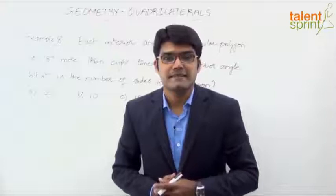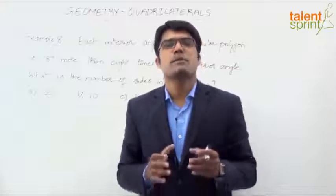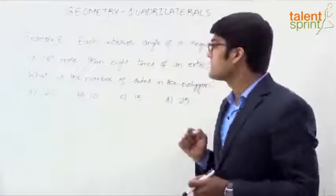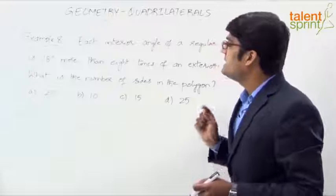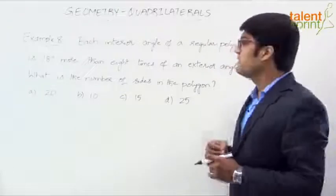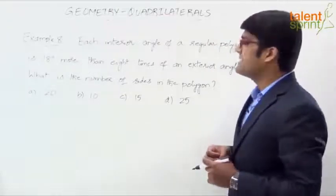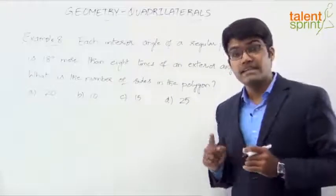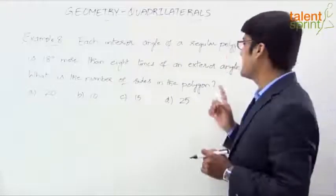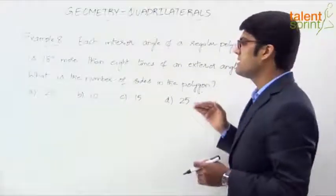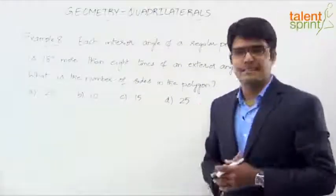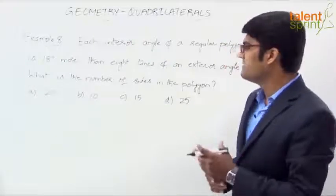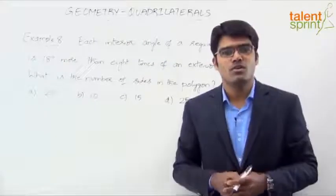Let us now look at the next example which is based on polygons. Each interior angle of a regular polygon is 18 degrees more than 8 times of an exterior angle. What is the number of sides in the polygon? Options are 20, 10, 15, or 25.